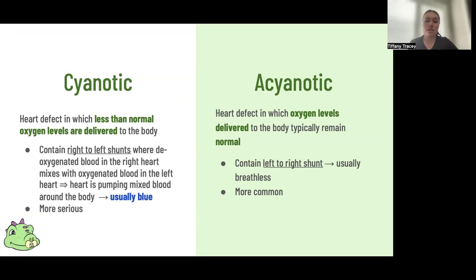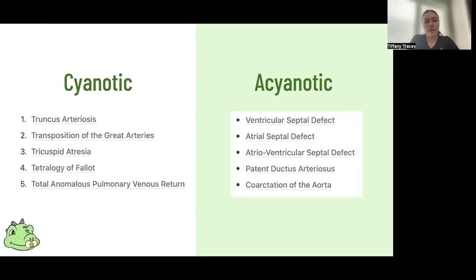This causes less than normal oxygen levels being delivered to the body and cyanosis. These are typically more serious but less common than our acyanotics, which will have a left-to-right shunt because the higher pressure is still on the left. So there's still only oxygenated blood going out to circulation, but mixed blood on the right going into our lungs.